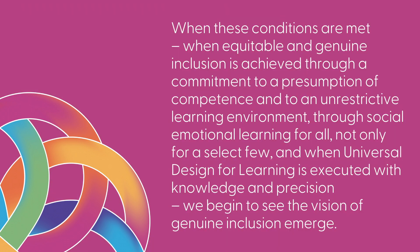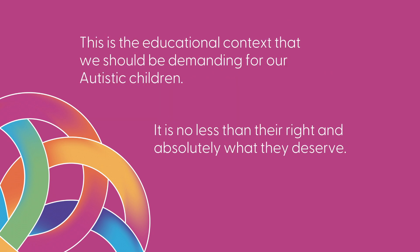When these conditions are met — when equitable and genuine inclusion is achieved through a commitment to presumption of competence and to an unrestrictive learning environment, through social emotional learning for all, not only for a select few, and when universal design for learning is executed with knowledge and precision — we begin to see the vision of genuine inclusion emerge. This is the educational context we should be demanding for our autistic children. It is no less than their right and absolutely what they deserve.